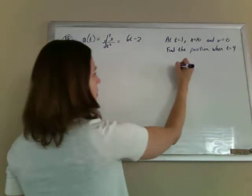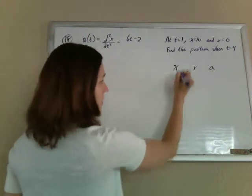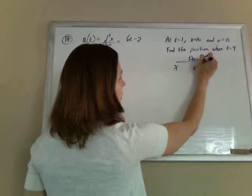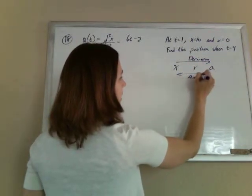Okay, so we know that the relationship between position, velocity, and acceleration is that if we go this way, we take derivatives, and so if we go backwards, we're taking antiderivatives.